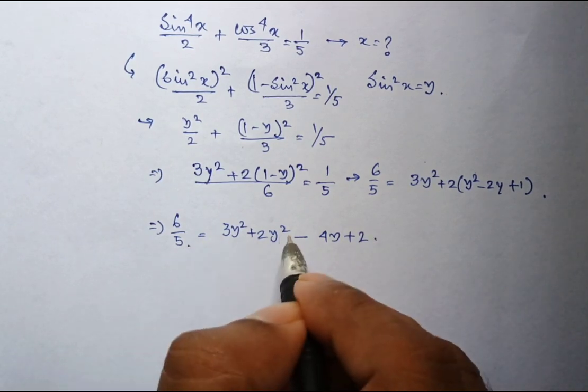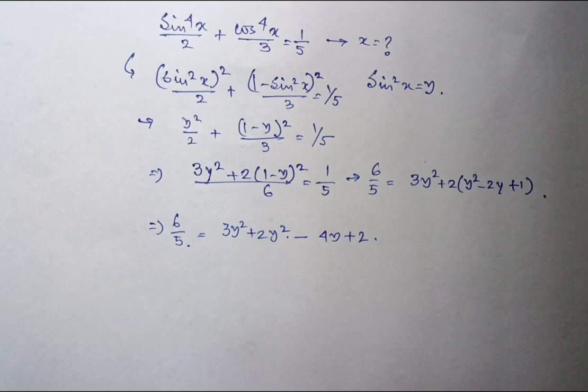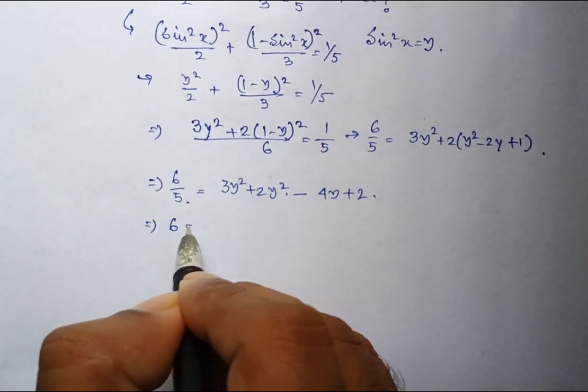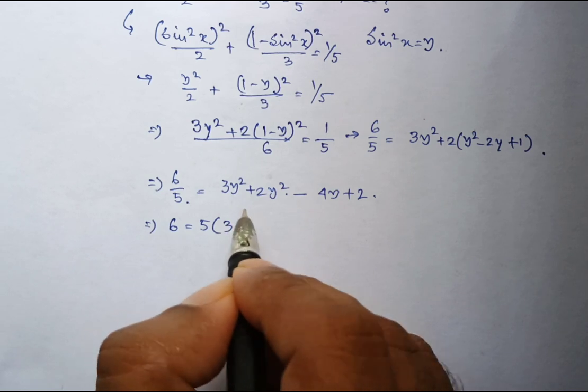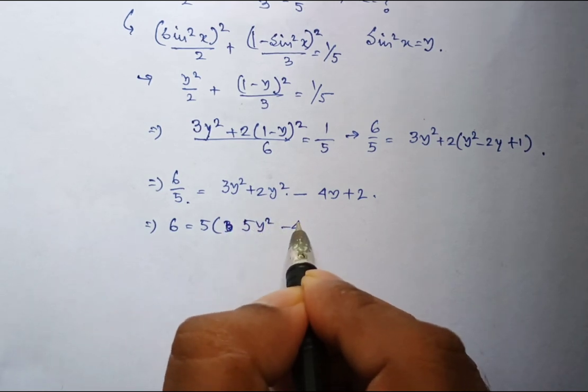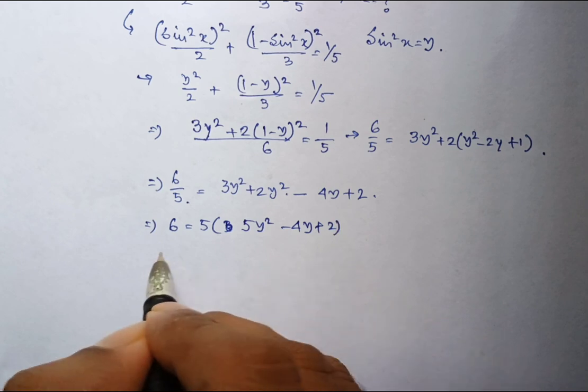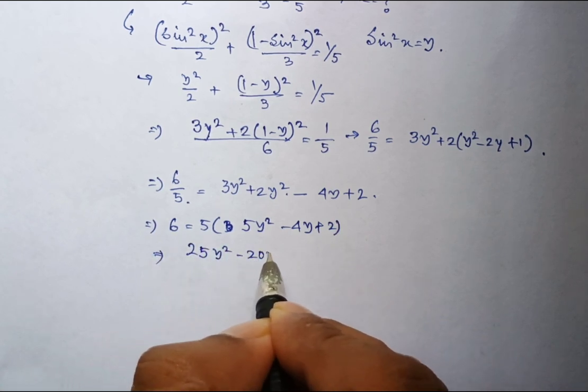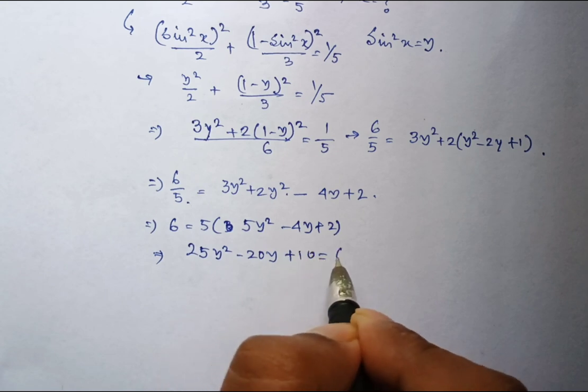If I multiply the right expression with 5, then I will get 6 equal to 5 into 3y square plus 2y square, equal to 5y square minus 4y plus 2, which means that 25y square minus 20y plus 10 equal to 6.